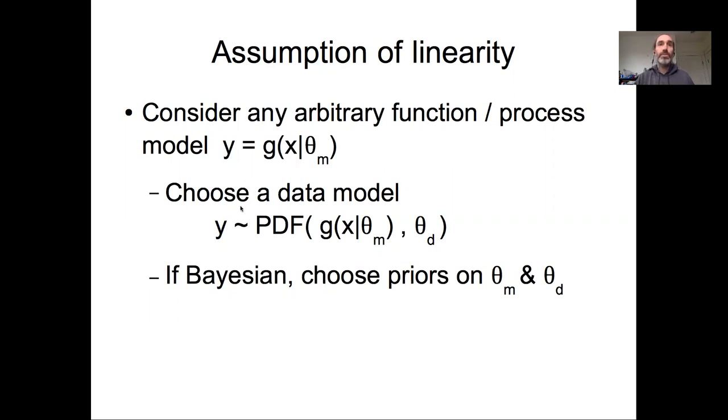We need to choose that process model. We need to choose an appropriate data model that may or may not be normal. And that data model itself may have additional parameters. And then if we are doing this in a Bayesian perspective, we would need to have priors on theta_M, the process model's parameters, and theta_D, the data model's parameters.